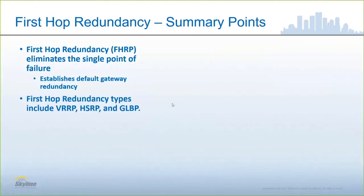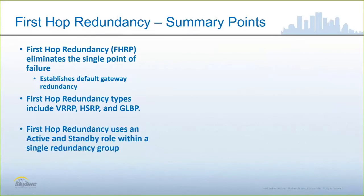The terminology FHRP — first hop redundancy protocol — refers to these three technologies: virtual router redundancy protocol, hot standby redundancy protocol, and gateway load balancing protocol. First hop redundancy uses an active and standby role within a single redundancy group.